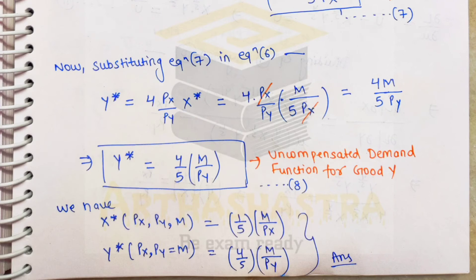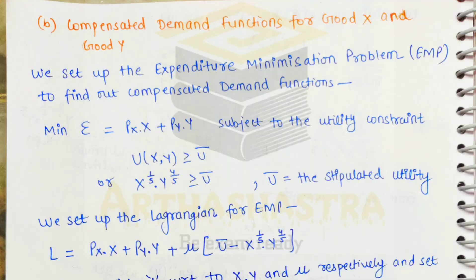Moving forward to Part B, we are asked to find compensated demand functions, also known as Hicksian demand functions. To solve for Hicksian demand functions we set up the expenditure minimization problem, in which the consumer aims to minimize expenditure on the consumption of two goods while maintaining a certain level of utility. We set up the problem as: minimize expenditure = px·x + py·y, subject to x^(1/5)·y^(4/5) ≥ ū, where ū is the stipulated level of utility.